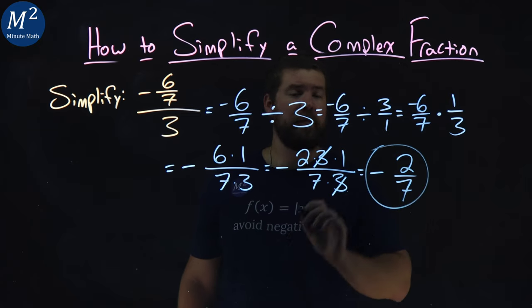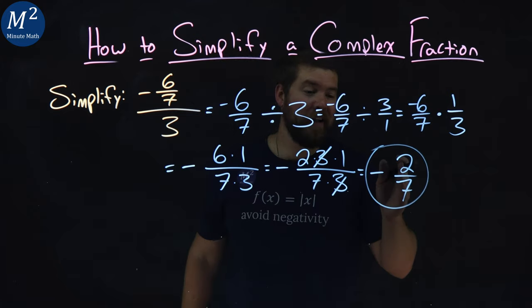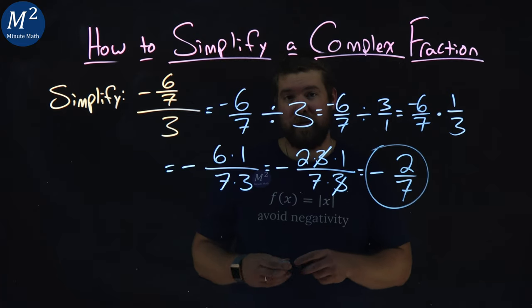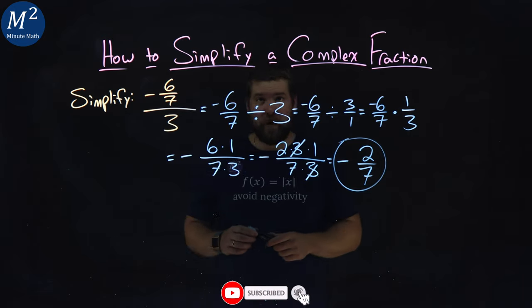And there we have it. We simplified negative six-sevenths over three, and we get negative two-sevenths. I hope you learned something here on how to simplify a complex fraction.